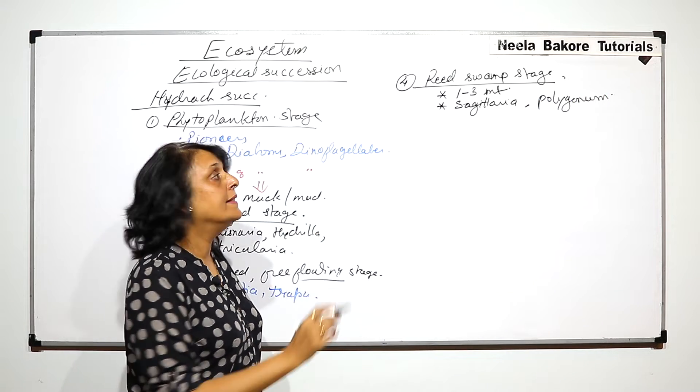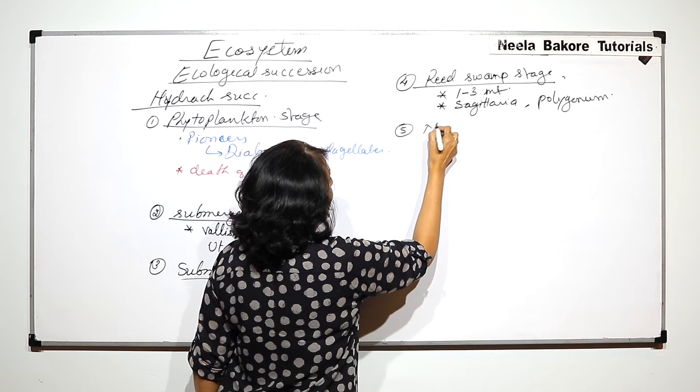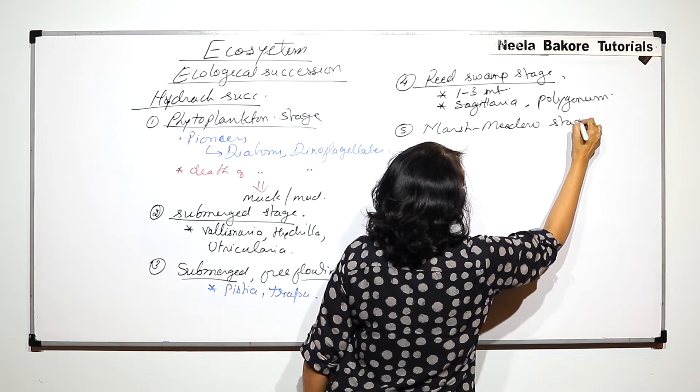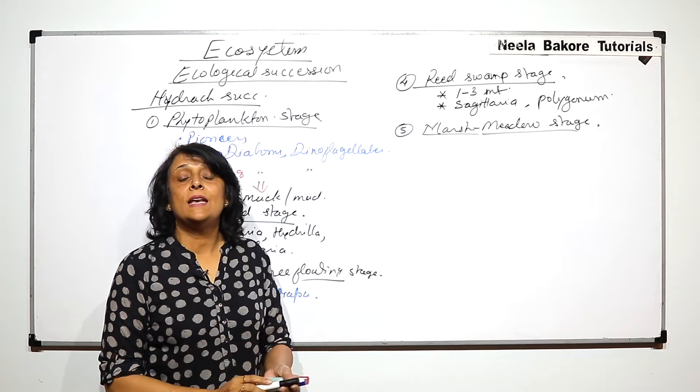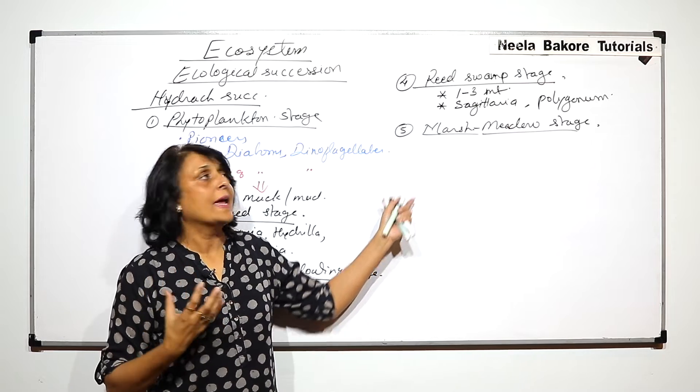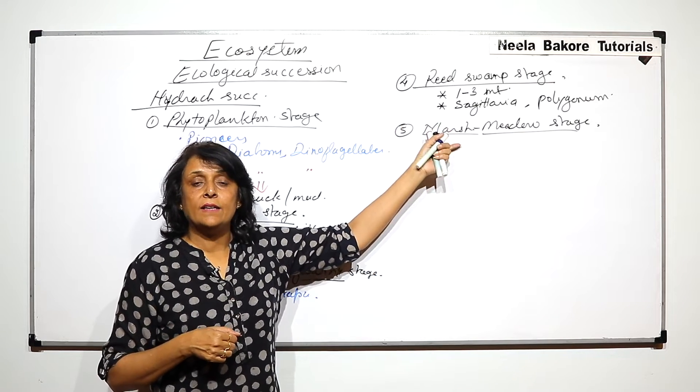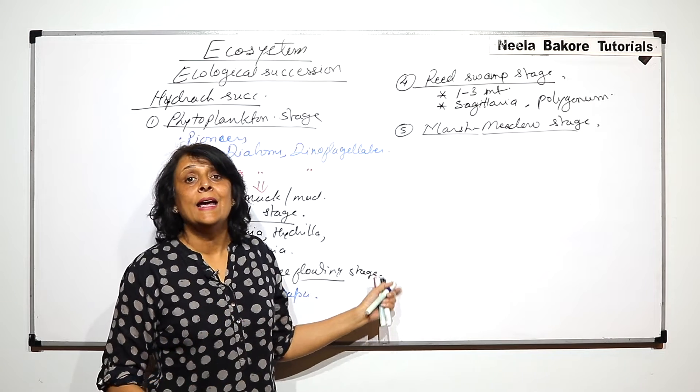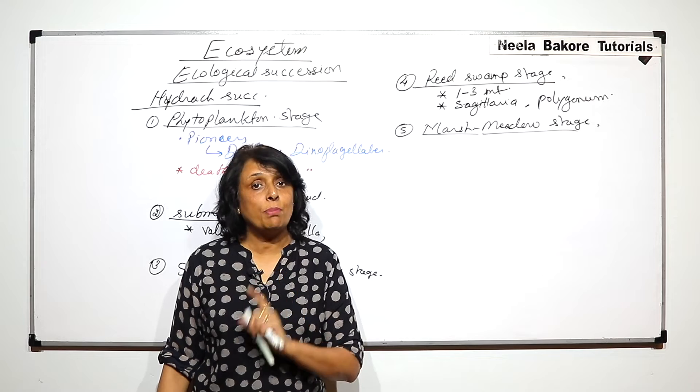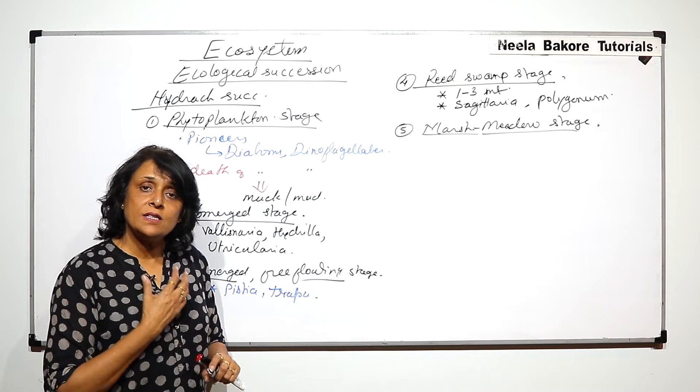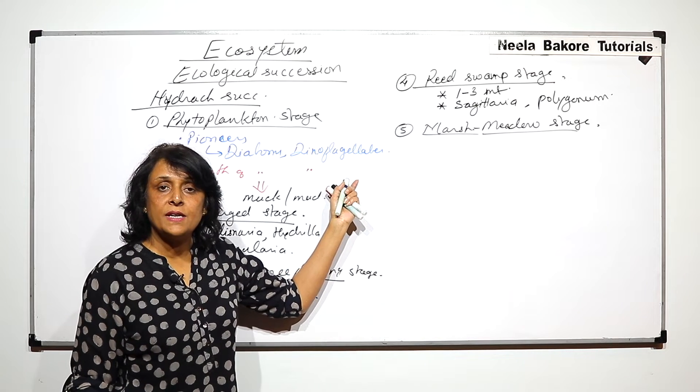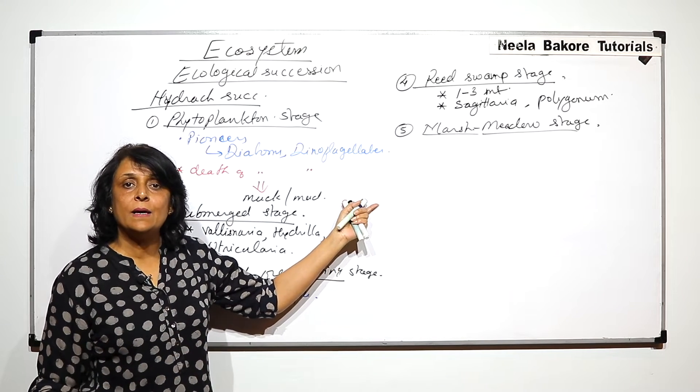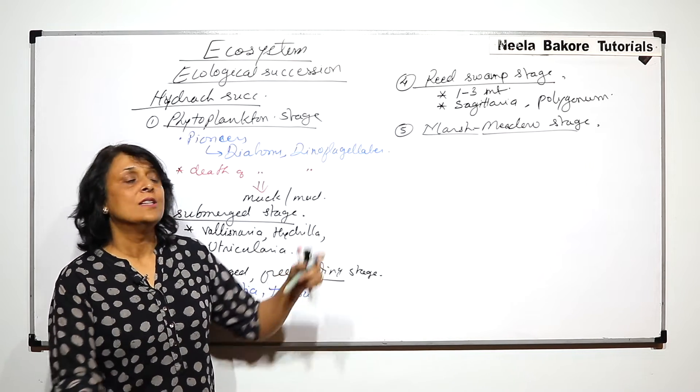The next stage is known as marsh meadow stage. In marsh meadow stage, now the lake is going to get even more shallow. Again there is one more seral community which is added and all other previous ones are already there. Now more and more organisms are going to die. Normally whenever we talk of succession we write down the names of plants, but plant and animal succession takes place at the same pace. So there are animals also which are present along with the plants. So all this organic matter gets added up at the bottom and the lake becomes shallower and shallower.